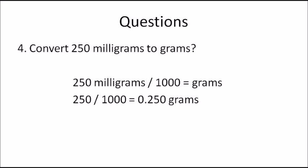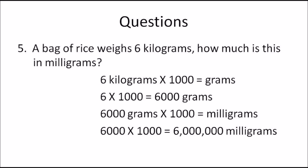Question 5: A bag of rice weighs 6 kilograms — how much is this in milligrams? You go from kilograms to grams, then grams to milligrams, so your answer will be much larger. First: 6 × 1000 = 6000 grams. Then: 6000 × 1000 = 6,000,000 milligrams.